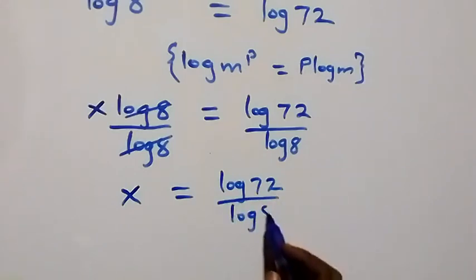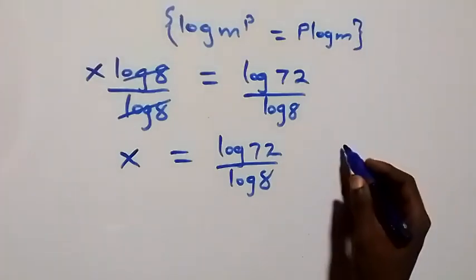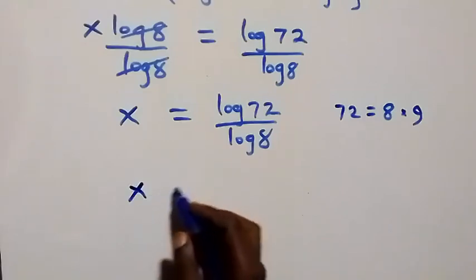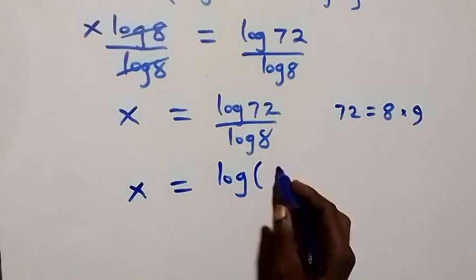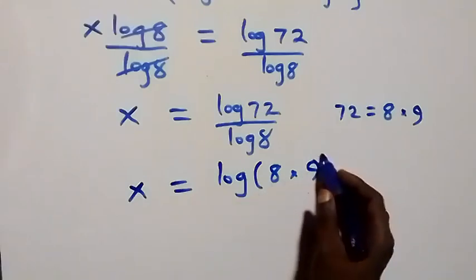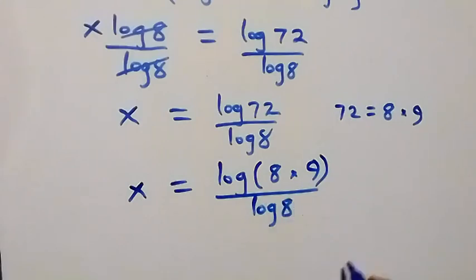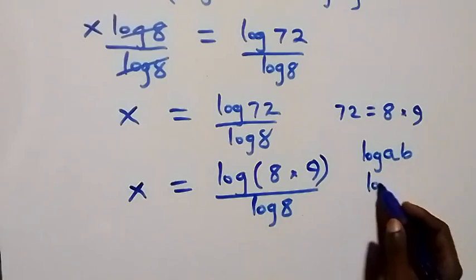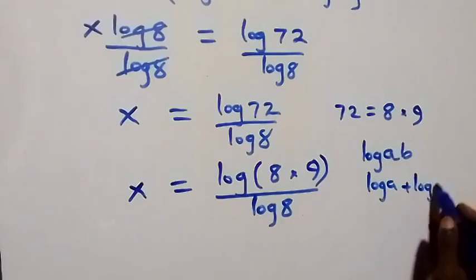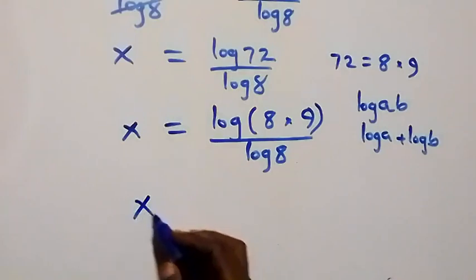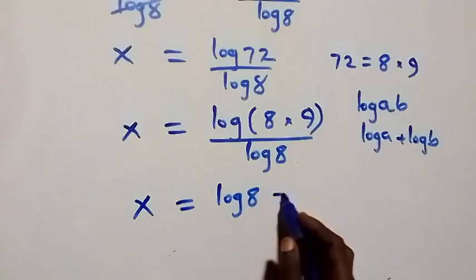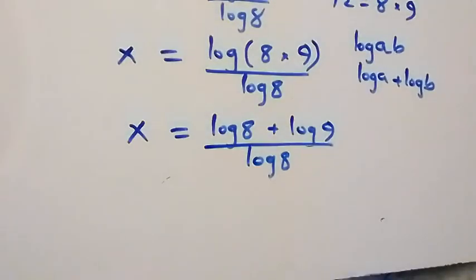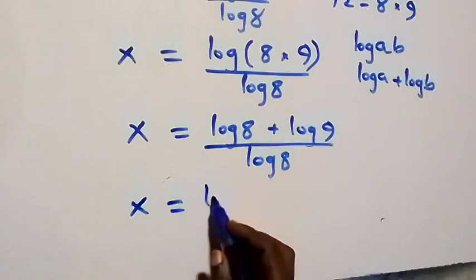Now 72 can be written as 8 times 9, so we have x equals log of (8 times 9) over log 8. Applying the product law of logarithms, which states log(a times b) equals log a plus log b, we expand the numerator.